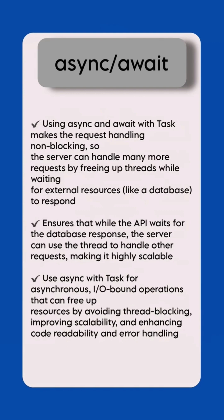It ensures that while the API waits for the database response, the server can use the thread to handle other requests, making it highly scalable. Use async with Task for asynchronous, IO-bound operations that free up resources by avoiding thread blocking, improving scalability, and enhancing code readability and error handling.